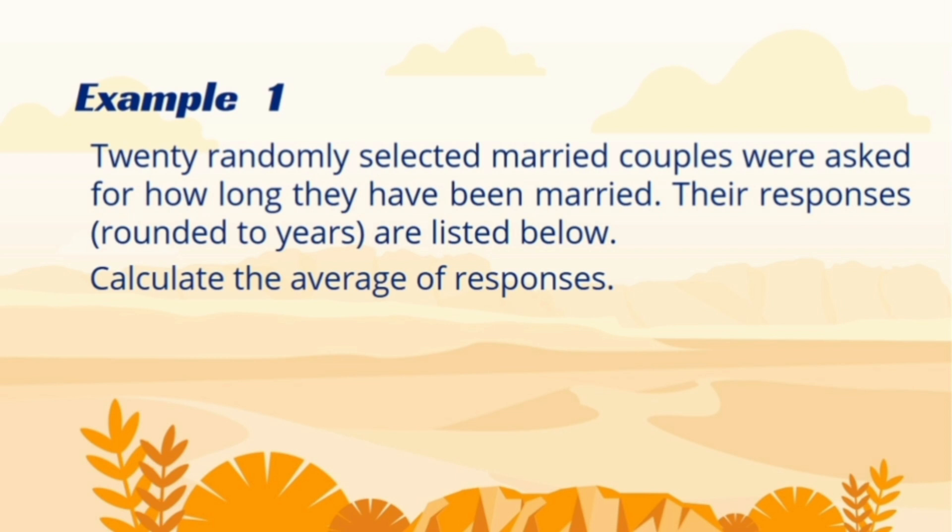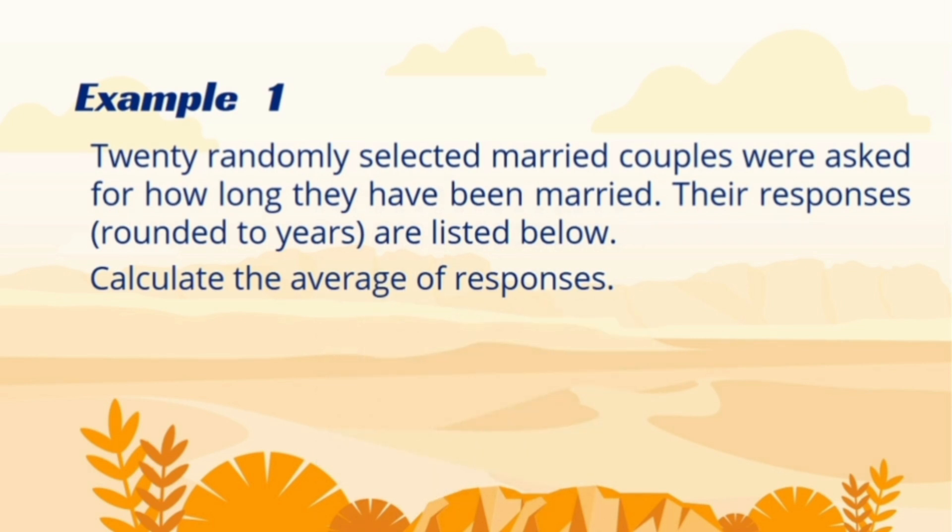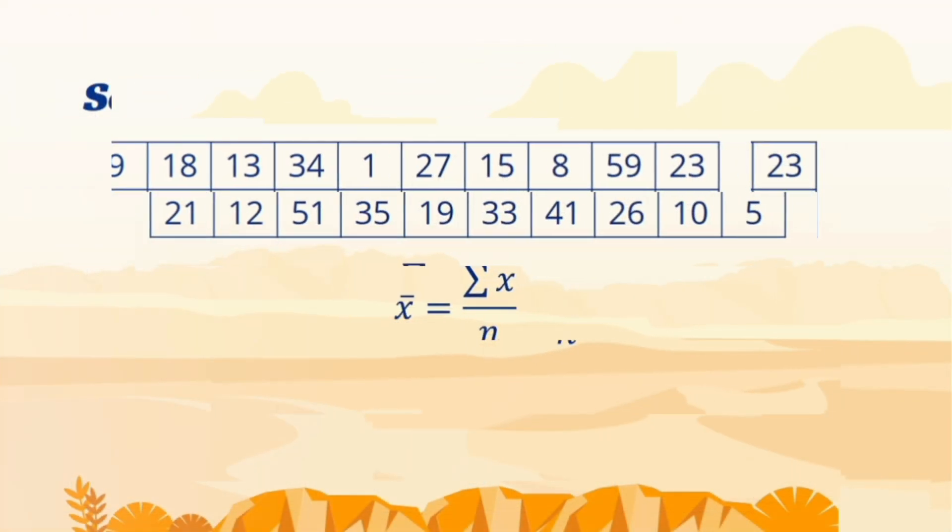In the first example, the married couples were asked how long they have been married. Their responses were rounded up to years. For this purpose, a large dataset has been collected from a famous city and to ease understanding, I am limiting it to only 20 responses.